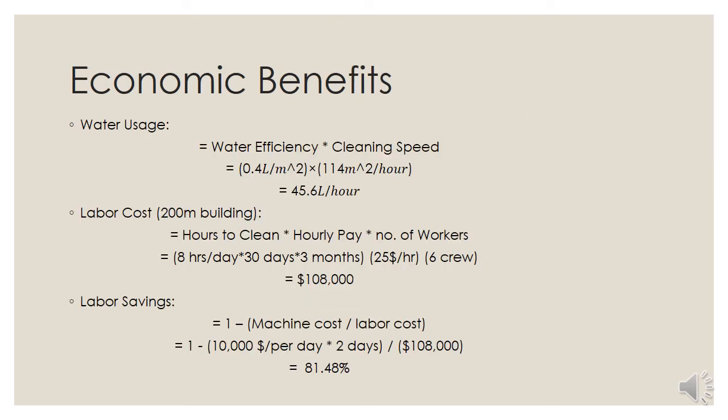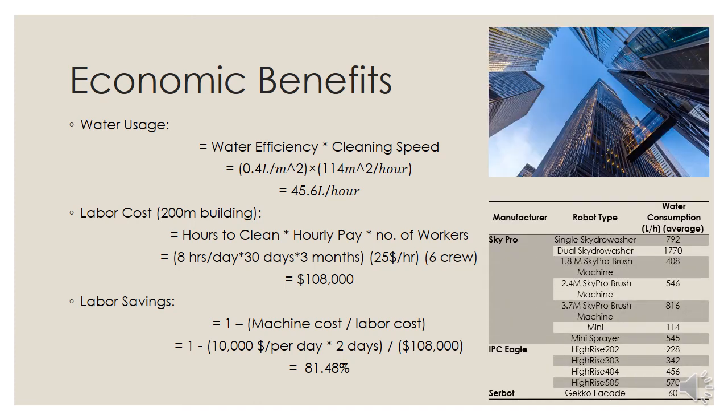To know the economic benefit, it is important to calculate water and labor savings with the implementation of the said machine. To calculate water usage, the current formula was used where water efficiency times cleaning speed gives us the water usage. The water usage of our machine was calculated to be 0.4 liters per meter squared, and the cleaning speed was measured to be 114 meters squared per hour. This results in the water usage of 45.6 liters per hour. Comparing this to the values on the table on the right, we can see that our design uses less water than any of the competitors. In order to calculate labor cost, the following formula was used where hours to clean times hourly pay times number of workers gives us the labor cost for cleaning a 200 meter tall building. After solving this equation, we can see that our labor cost is $108,000. Now to calculate our labor savings, the machine cost was divided by the labor cost and then the whole thing subtracted by 1, which gives us labor savings of 81.48% for a cost of $88,000.